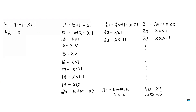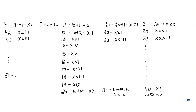43 is XLIII, and so on. 50 can be written as L. 51 can be written as 50 plus 1, which is LI. 52 is LII, 53 is LIII, and so on up to 60.